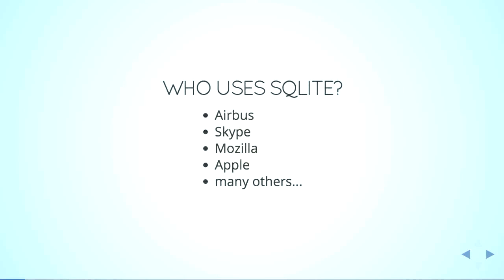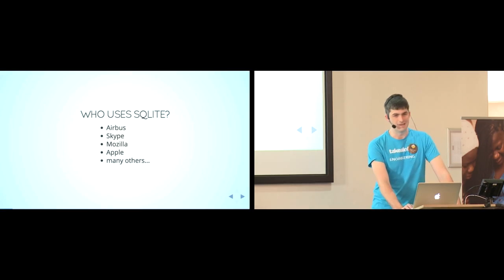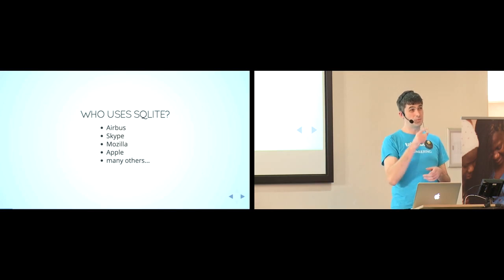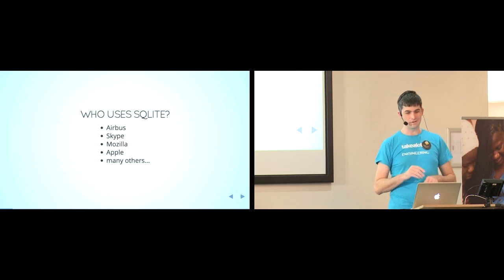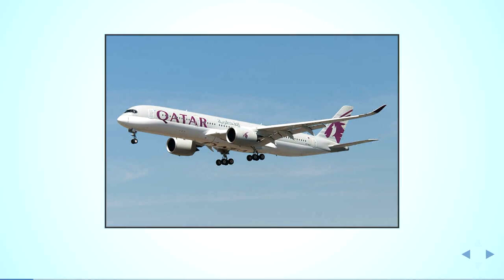SQLite is used by airlines for running their planes. Skype — if you check your profile files, the directories actually have SQLite tables with all your conversations. Mozilla Firefox also uses it; they actually have browser history stored there. And of course, Apple has it on your phone, and even Android phones have it.